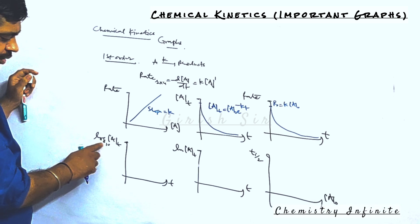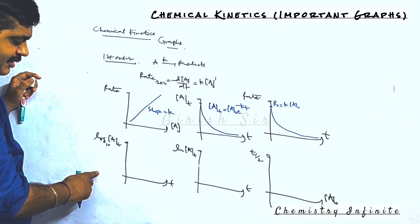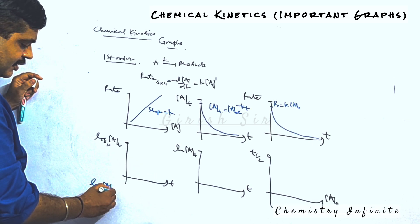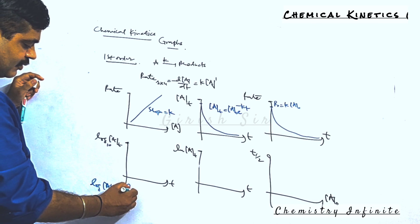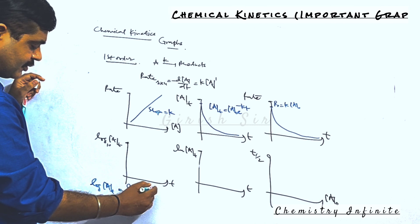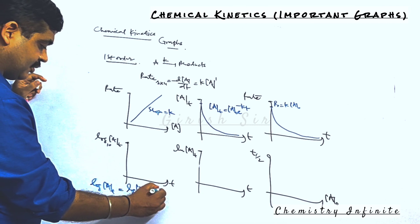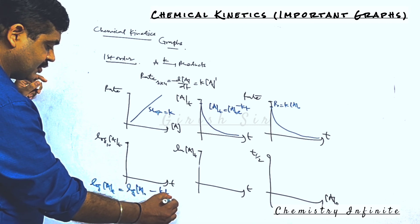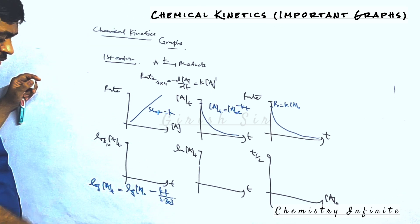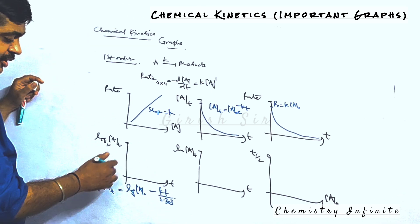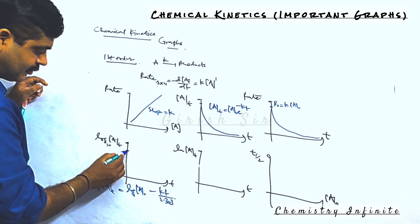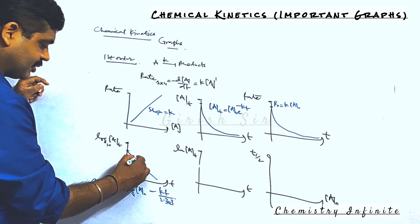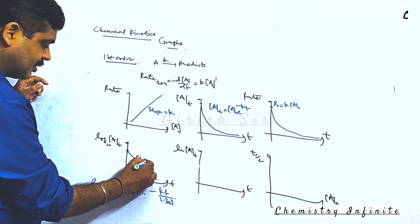The next graph is log[A] versus time. Log[A] equals log[A₀] minus kT divided by 2.303. Using this, we can make a plot — it's a linear graph whose slope is negative.